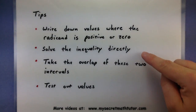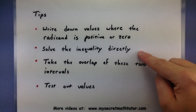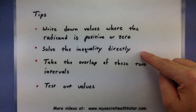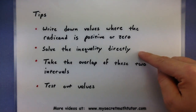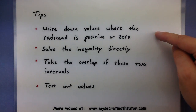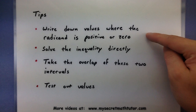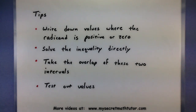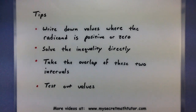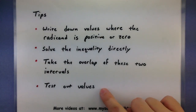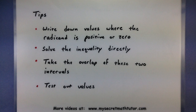Think of why that is. Well, we're really doing two things. We want to make sure that our values solve the equation, but we also want to make sure that they don't give us any negative values underneath that root. So the overlap will make sure that both of those conditions are met. Now if you really want to take this a little further, you can go ahead and test values in your interval just to make sure it really is the right one.